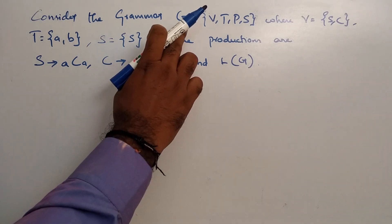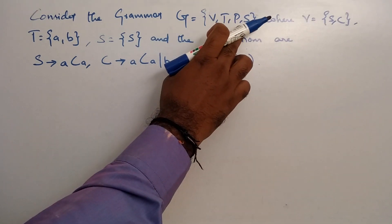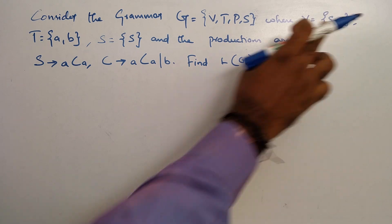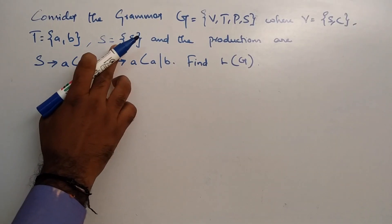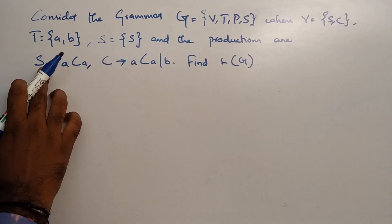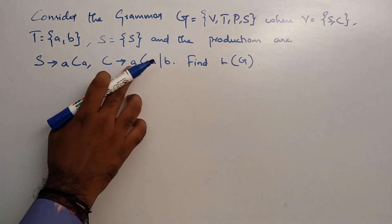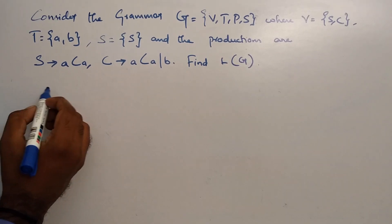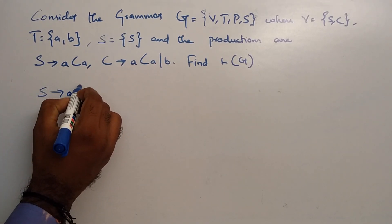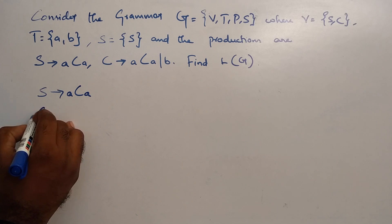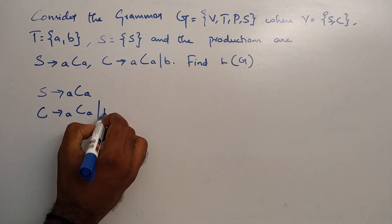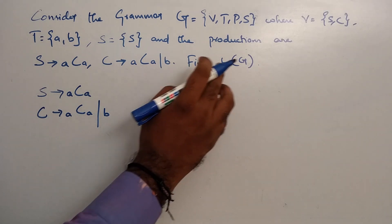The grammar G equals V, T, P, S where variables are S and C (capital letters), terminals are a and b, starting production is S. The productions are: S tends to ACA, and C tends to ACA or B.